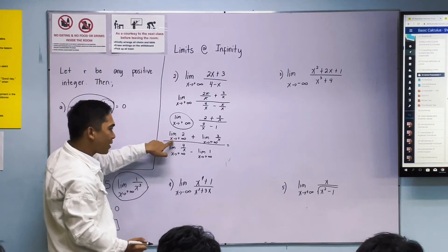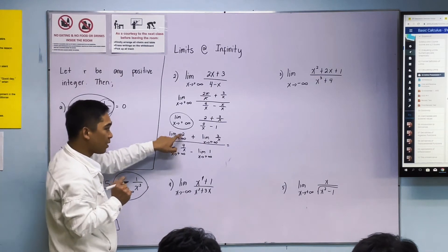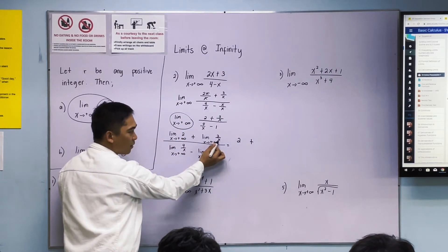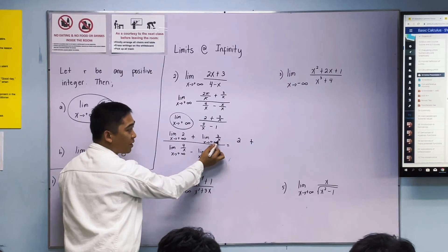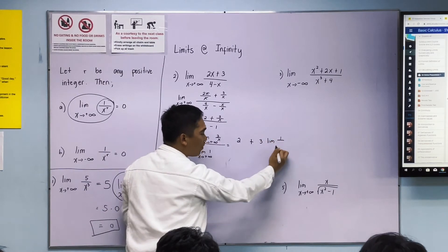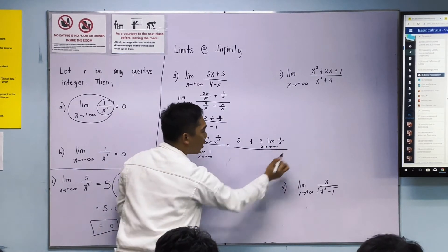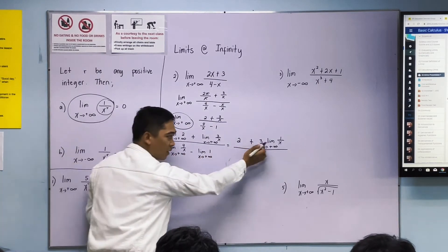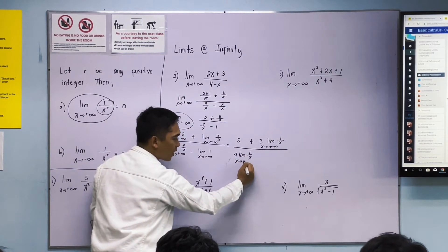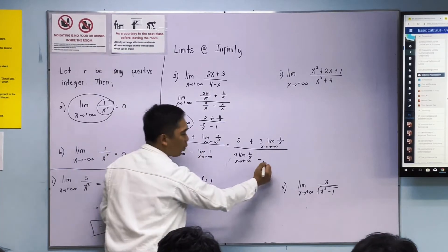It can be shortened once you've mastered the theorem, so we don't have to go through this. For example, limit of 2 as x approaches positive infinity. If you know theorem number 1, which we discussed last week, this is 2. This one becomes theorem number 3: 3 times limit of 1 over x as x approaches positive infinity. Over: 4 times limit of 1 over x as x approaches positive infinity, minus 1 which is constant.